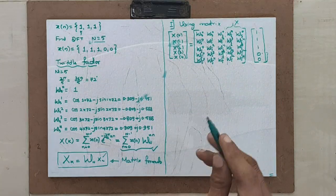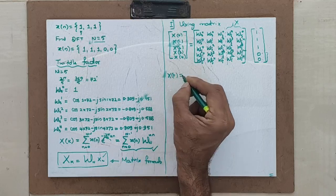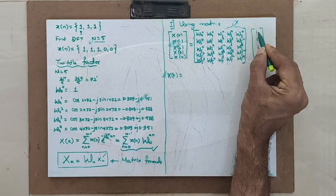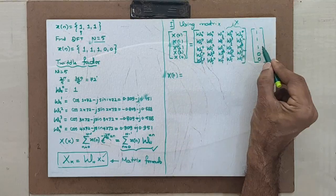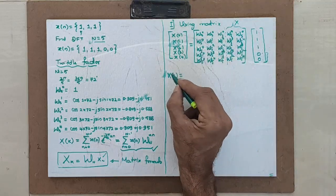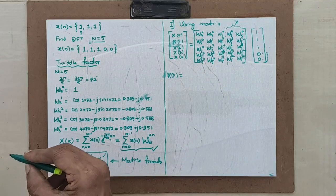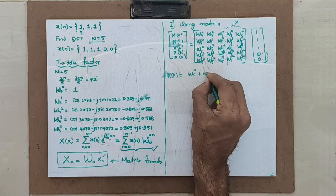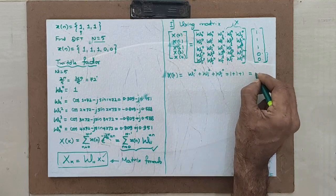Because the inputs are all 1s, W5^0 × 1 = W5^0 and we simply add. X(0) = W5^0 + W5^0 + W5^0 = 1 + 1 + 1 = 3.